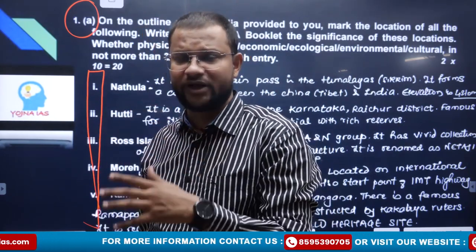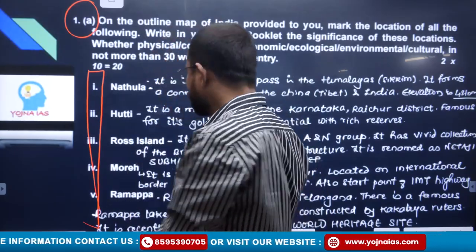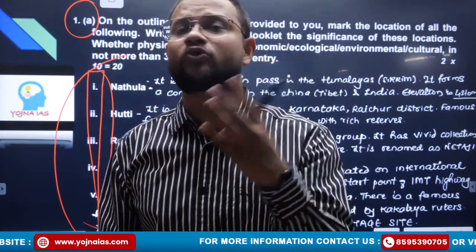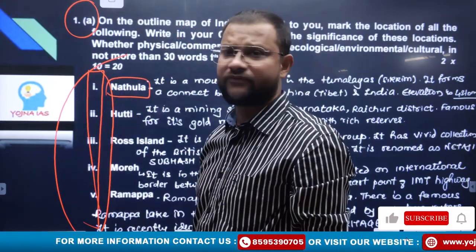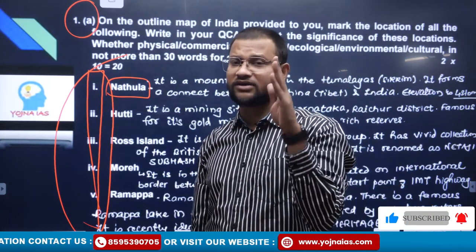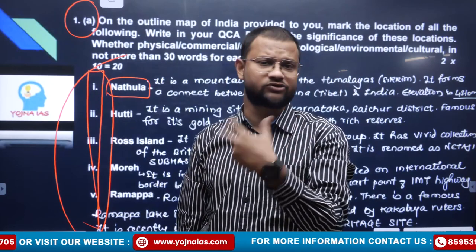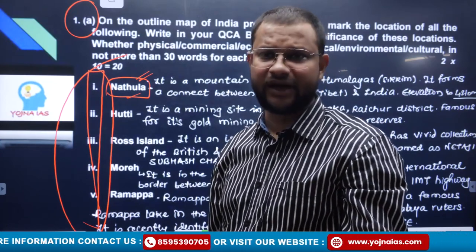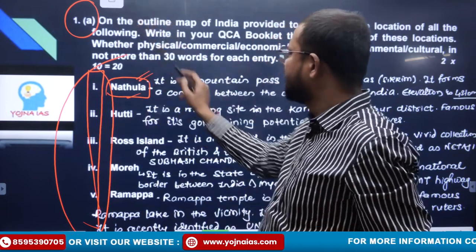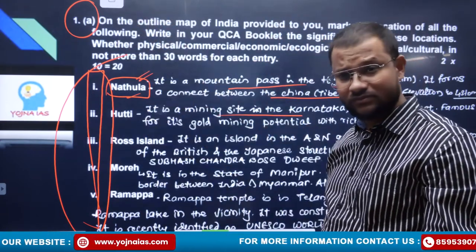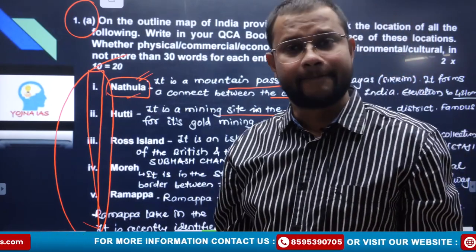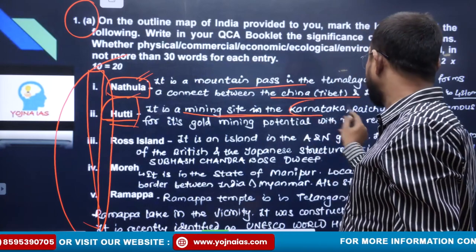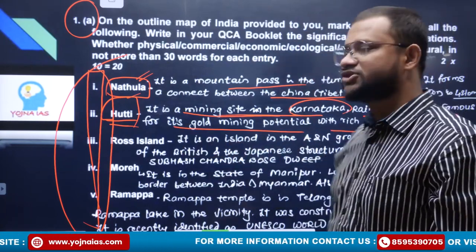The ten locations are given in different contexts — some geographical, some from current affairs due to political or cultural reasons. Natula, which is in current affairs, is the trijunction between Tibet, Sikkim, and the Bhutan region. You have to write about 20–30 words on this and locate it on the map provided. Then Houthi region — it is a mining site in Karnataka's Raichur district, famous for its gold mining potential with rich reserves.